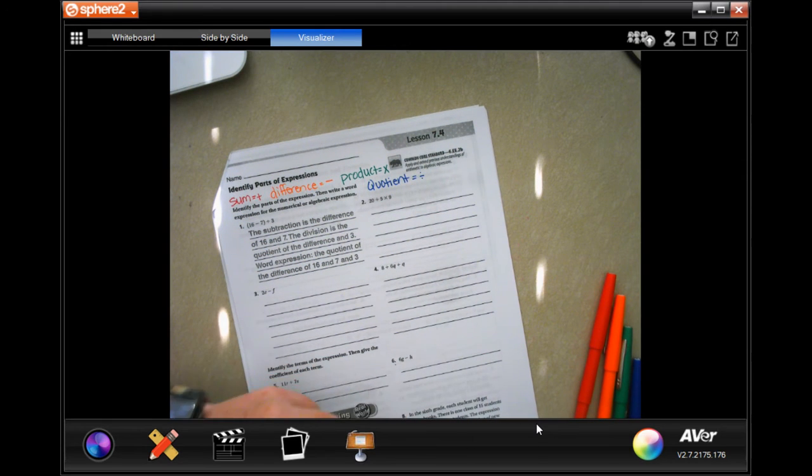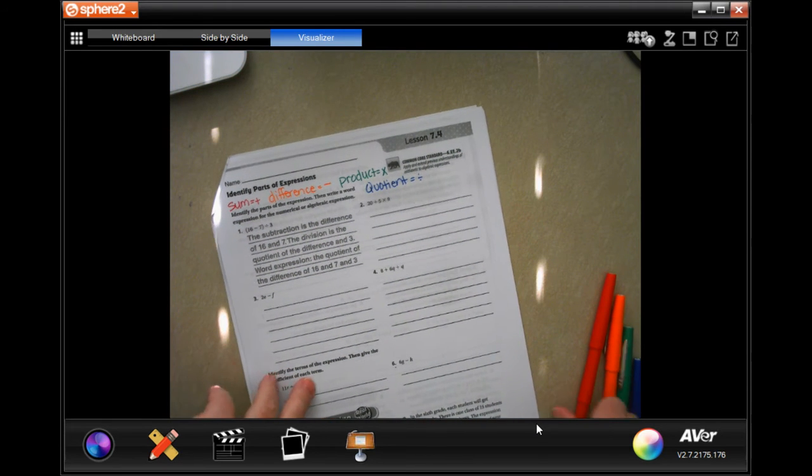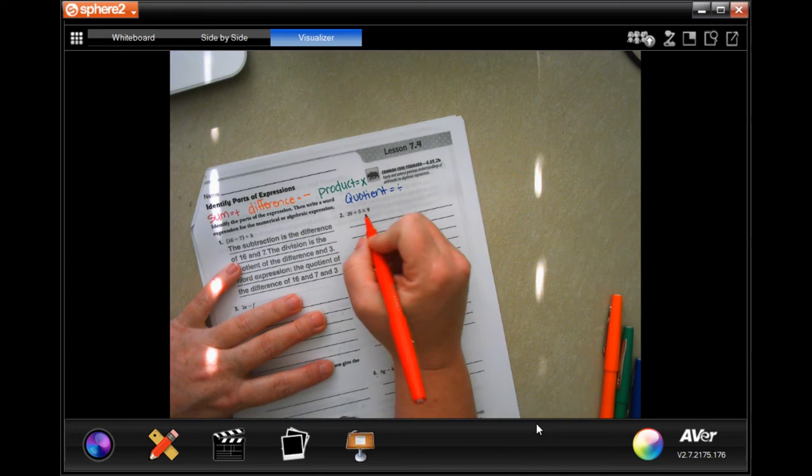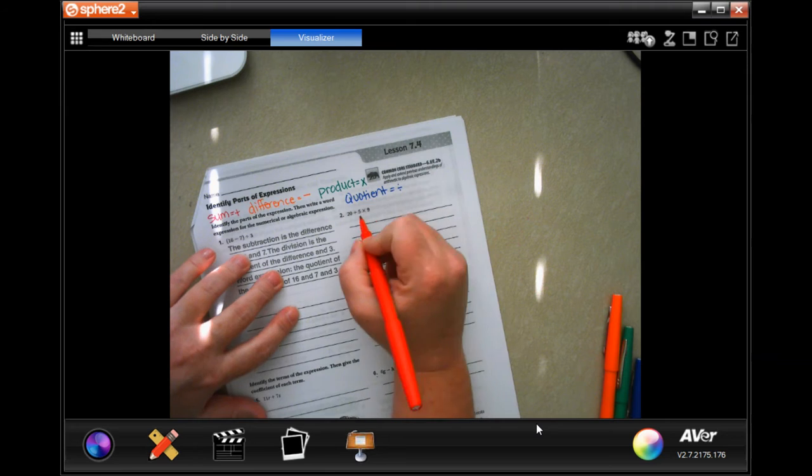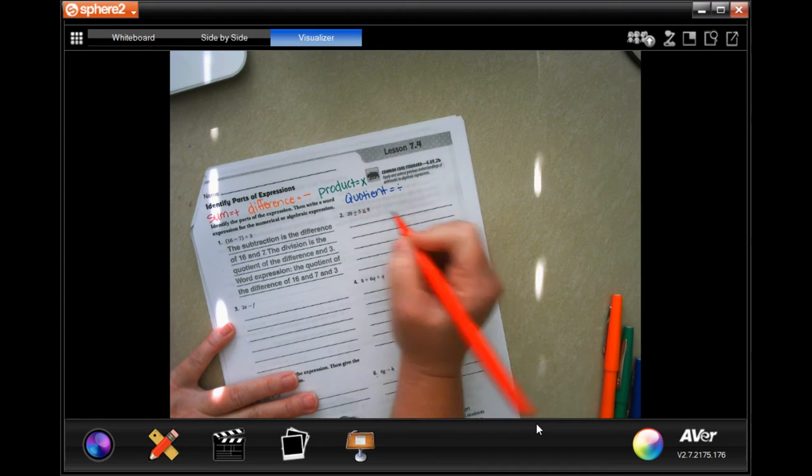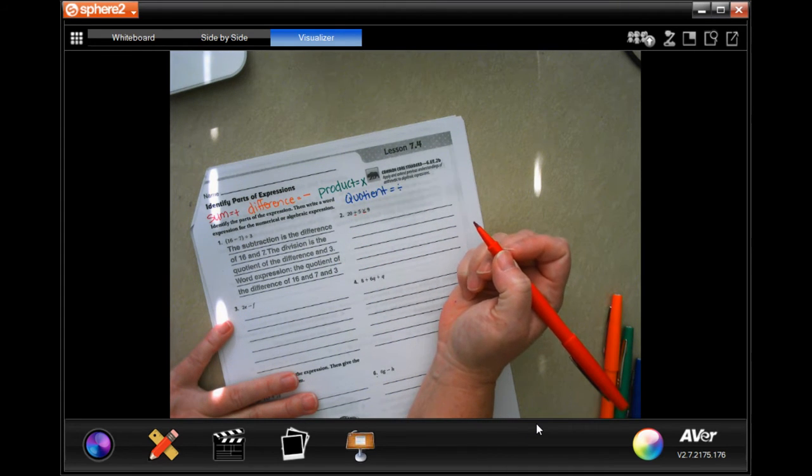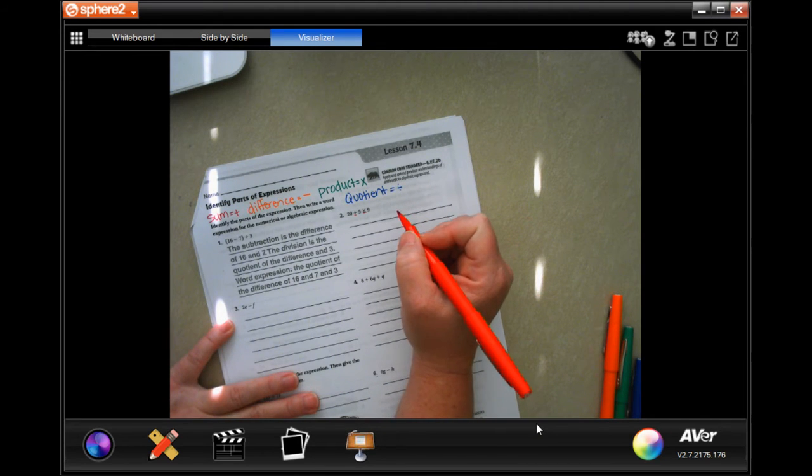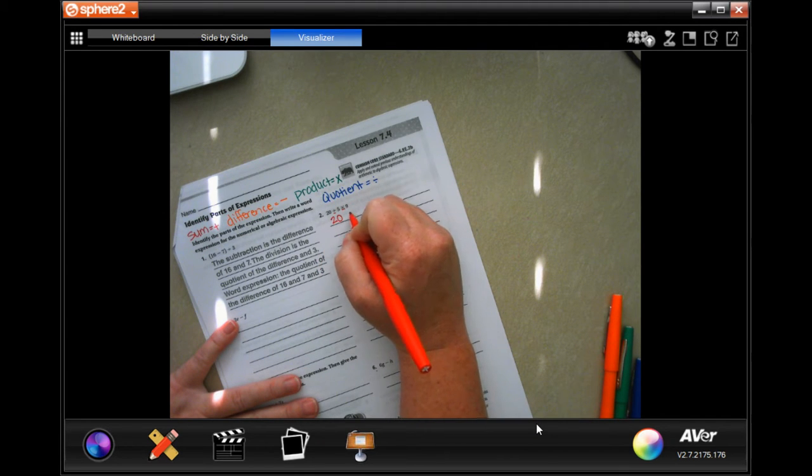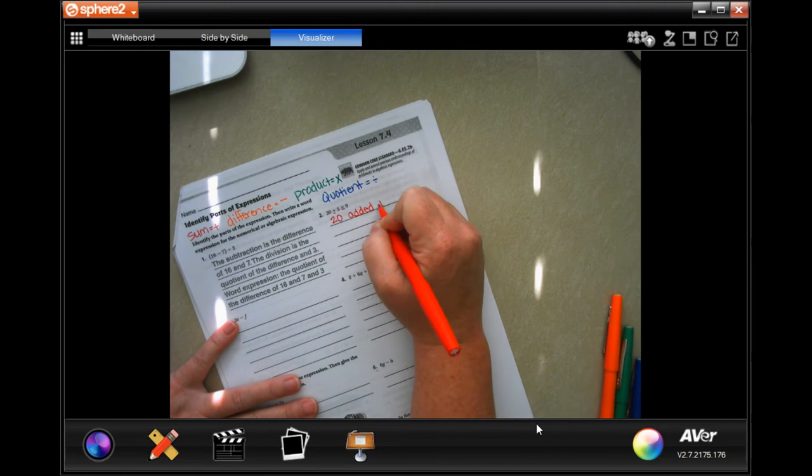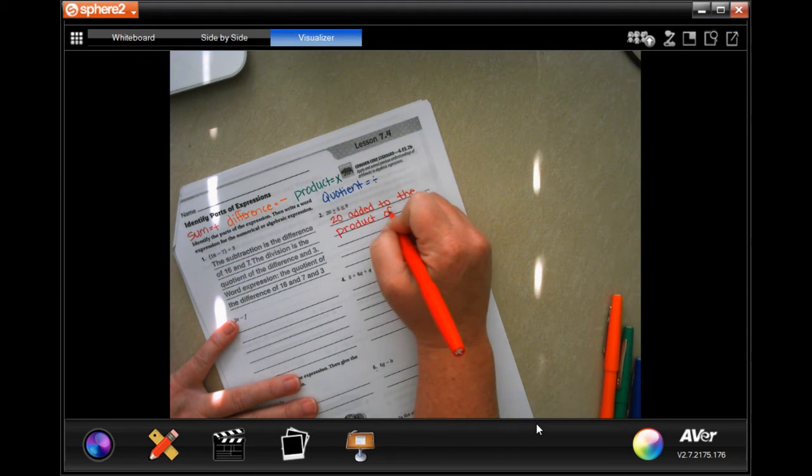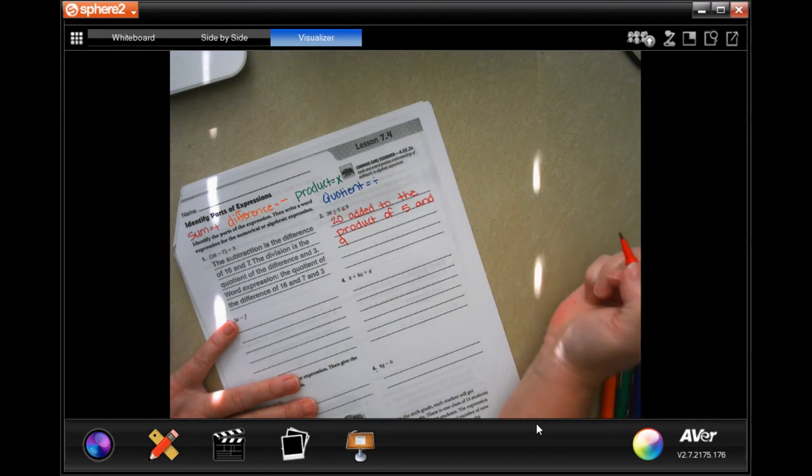All right, so we're going to get started. Number two: 20 plus five times nine. Well, the first thing that we would do is figure out, identify the parts. So the parts are going to be the multiplication and the addition. So identify the parts then write the word expression for the numerical or algebraic expression. So we could say 20 added to the product of five and nine.